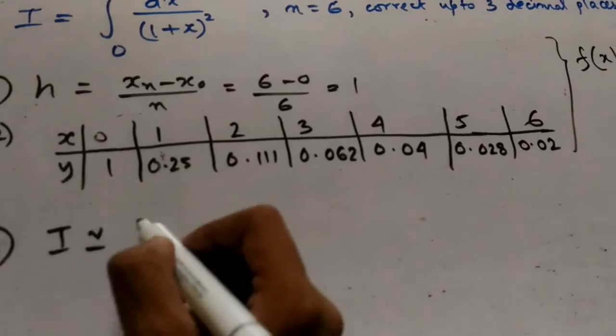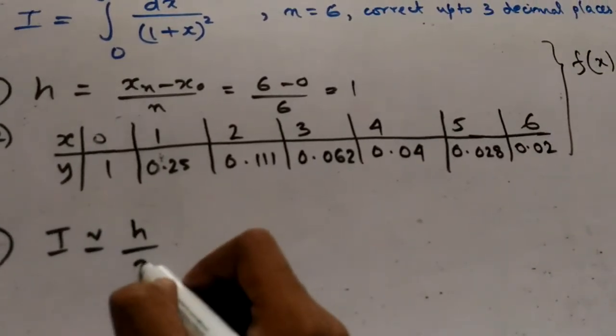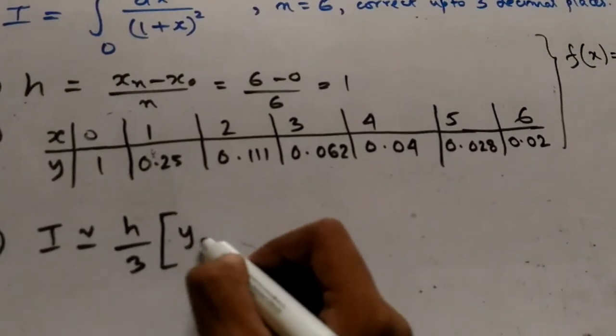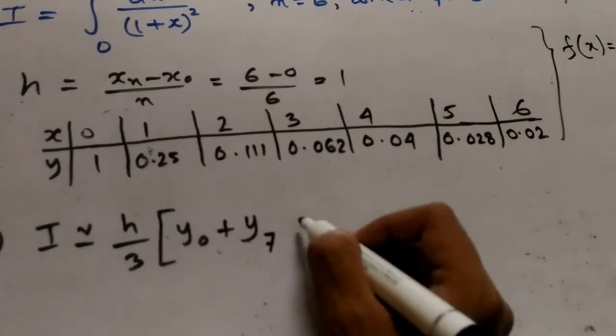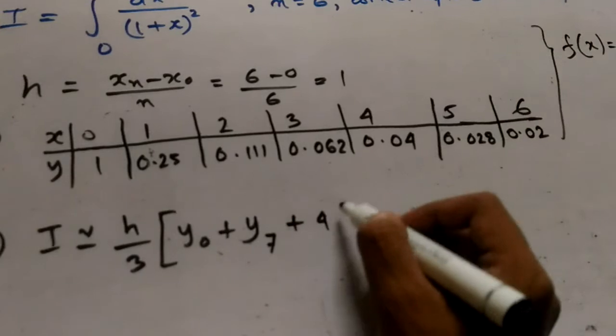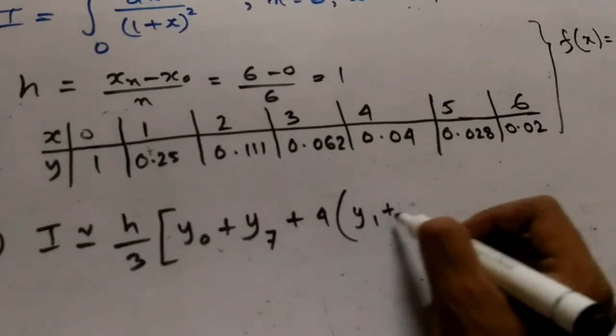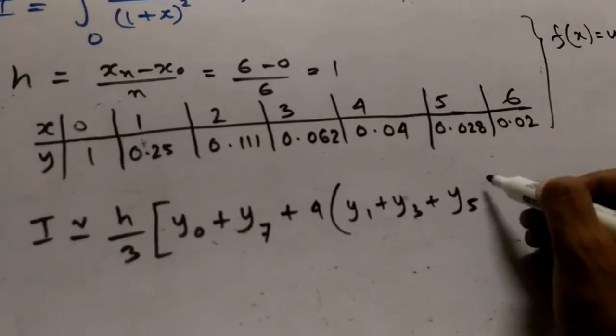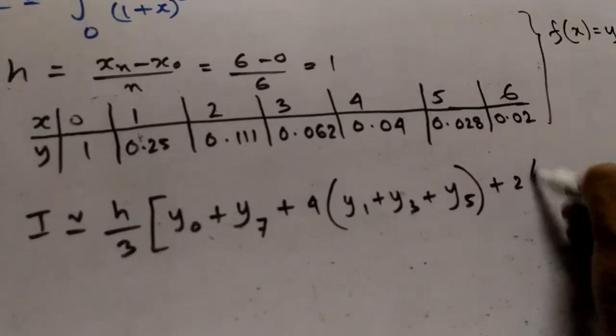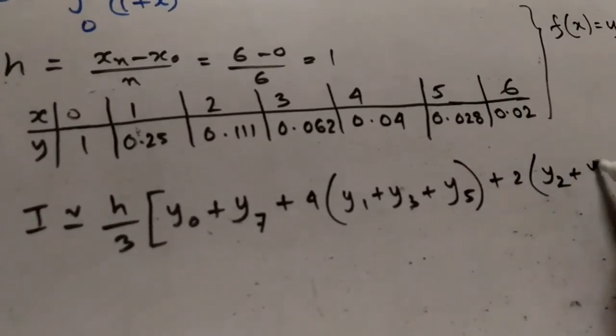I approximately equals, putting the formula, h/3 times y0 plus y6 plus 4 into y1 plus y3 plus y5 plus 2 into y2 plus y4.